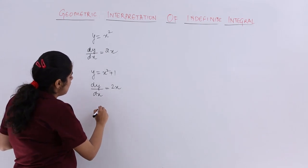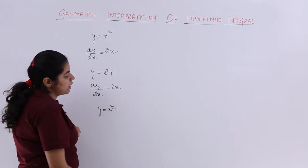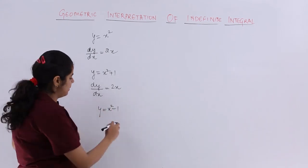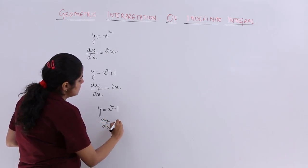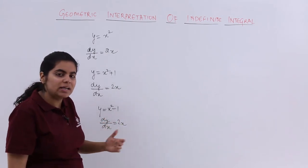This time I change my mind. I make y equal to x square minus 1. What is dy by dx? dy by dx again is 2x. Now what is happening?